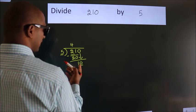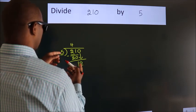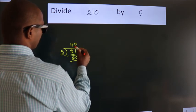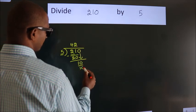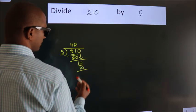So 10. When do we get 10 in the 5 table? 5 times 2 is 10. Now we subtract.